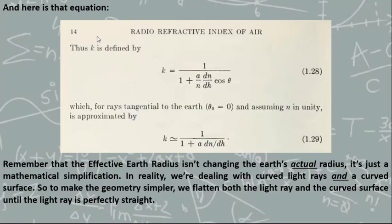Here is that equation, pretty early on in the book. K is the effective Earth radius, or the 7 over 6R multiplier, or 4 over 3 multiplier. Just keep in mind that this effective Earth radius is not fudging the actual radius of the Earth — it's really just a geometrical or mathematical simplification. In reality, when light refracts, it refracts in a curve. We also have a curved surface of the Earth. So to make the geometry simpler, we flatten out the curved light ray and also flatten out the surface of the Earth synchronously, until the light ray is perfectly straight. That makes the mathematics much simpler, dealing only with a straight line and a circle rather than two curved lines.